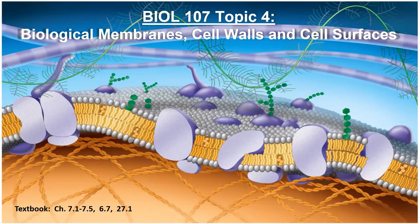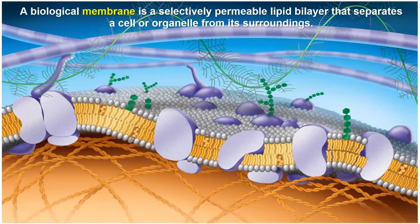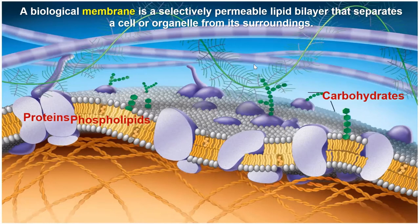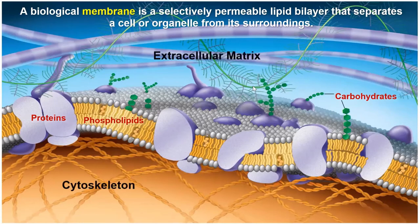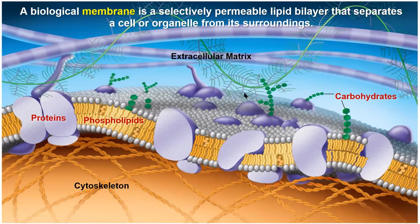So topic four is on membranes. First question: what is a membrane? A membrane is a lipid bilayer that separates the cell or an organelle from its surroundings. They're made out of phospholipids, but also about 50% of the mass is proteins, and sometimes carbohydrates as well. This diagram also shows an extracellular matrix and cytoskeleton — we'll touch on those briefly, but the cytoskeleton is topic seven, after the midterm, so don't worry about it now.